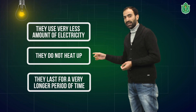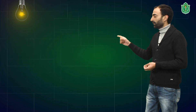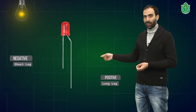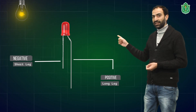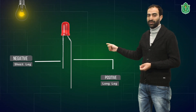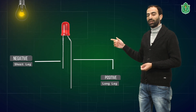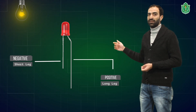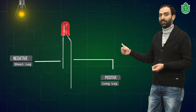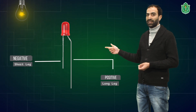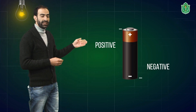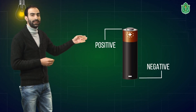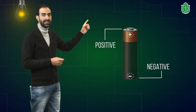These LEDs usually come with a specified positive and negative terminal. The longer wire of the LED represents the positive terminal while the shorter wire of the LED represents the negative terminal. Both the negative and positive terminals of the LED are connected with the respective positive and negative terminal of the cell.